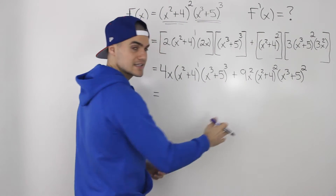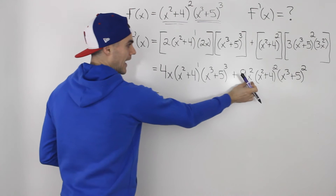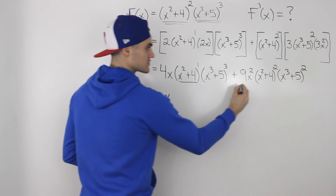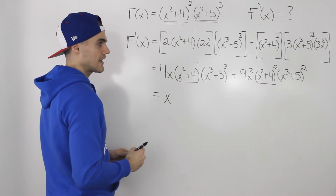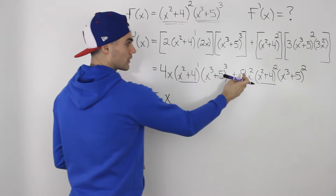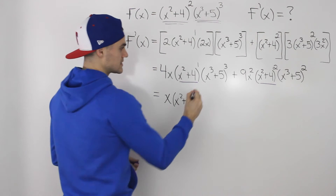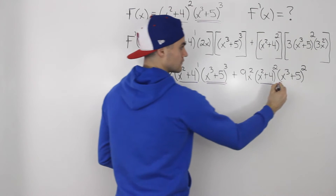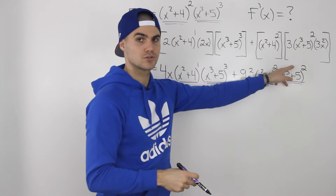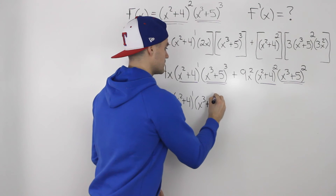Now from these two expressions, let's see if we can take out any like terms. Notice how we can take out an x from both expressions. We can also take out the bracket x squared plus 4 from both terms — you take out x squared plus 4 to the power of the lower of the exponents. So 1 is the lower exponent of 1 and 2, so we take out x squared plus 4 to the power of 1. And notice x cubed plus 5 is common in both as well. Same thing — we take out the lower exponent. We have 3 and 2, so the lower exponent is 2, so we take out x cubed plus 5 to the power of 2.